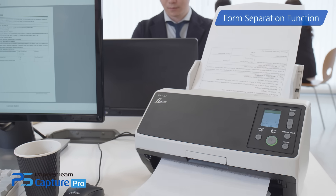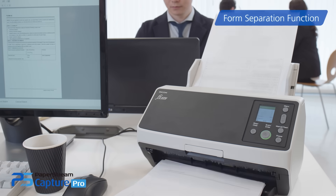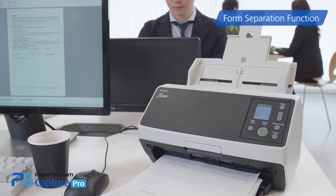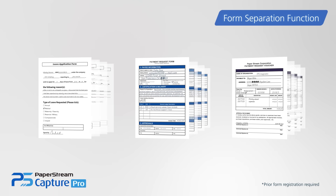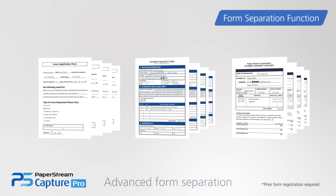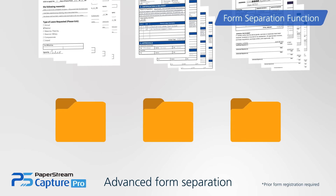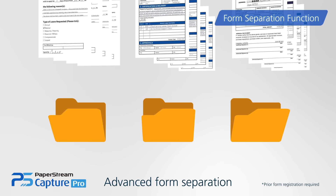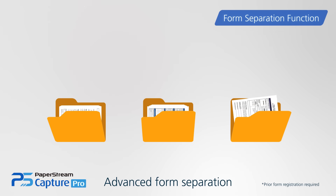When multiple documents with different layouts are all scanned together, the software automatically detects the differing form types and separates them accordingly. This allows you to process work more smoothly.